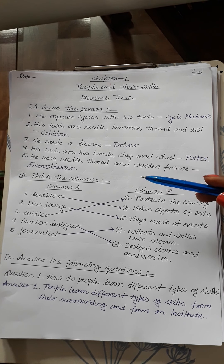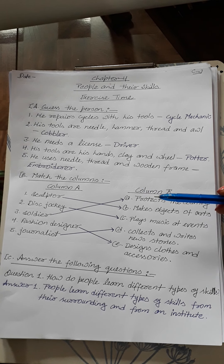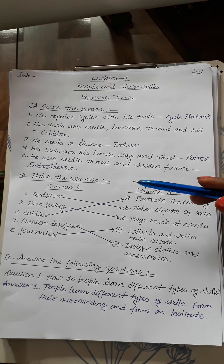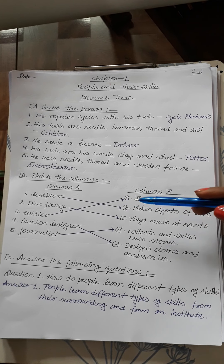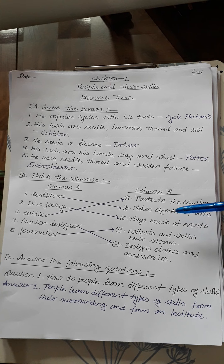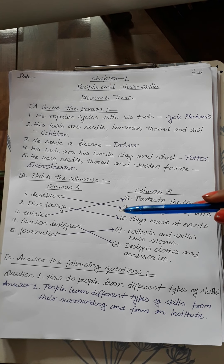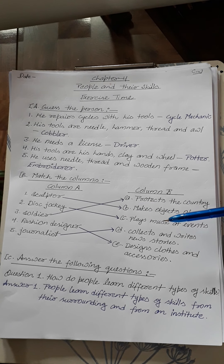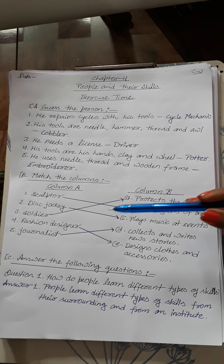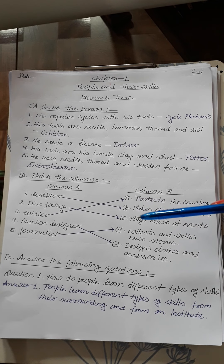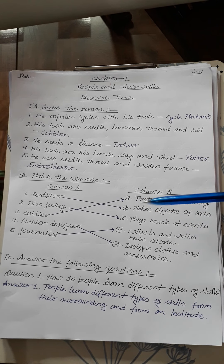Now Part B: Match the Columns. You can see Column A and Column B — we have to match them. Number 2: Disc jockey — a disc jockey plays music at events. Number 3: Soldier — a soldier protects the country.